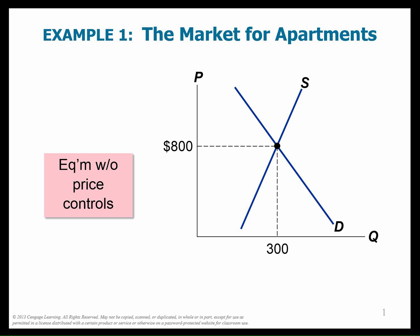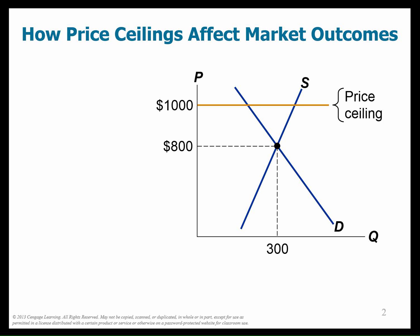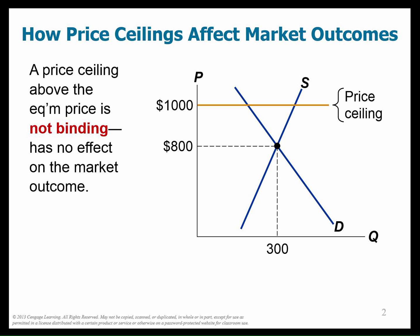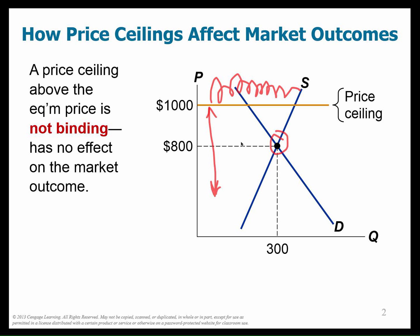Now I'm going to introduce a price control called a price ceiling. This is a non-binding price ceiling because the price naturally wants to be at $800, and the government says $1,000 is the maximum. A price ceiling means the price can be at the ceiling or below — this is the legal region. Any price above is illegal. This $800 price is within the legal region, so this price ceiling doesn't affect the price. That's known as not binding.